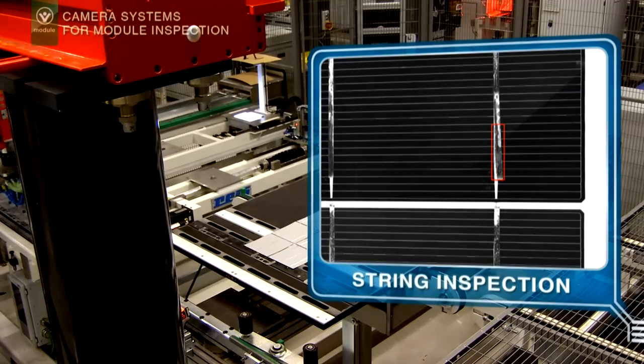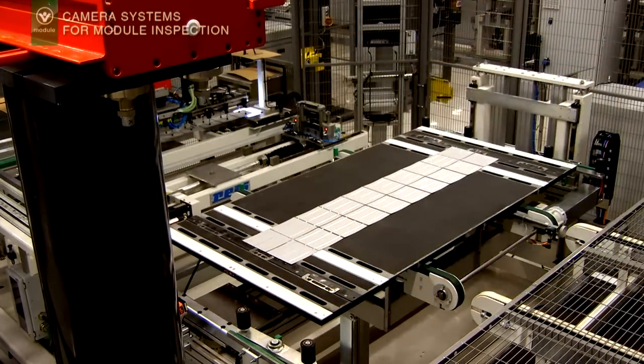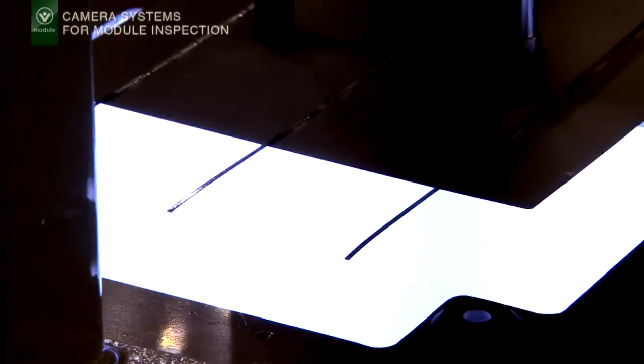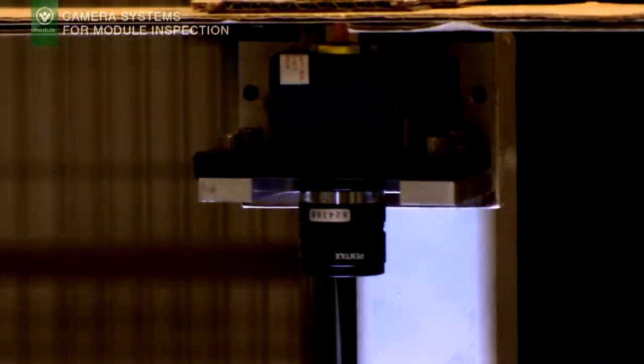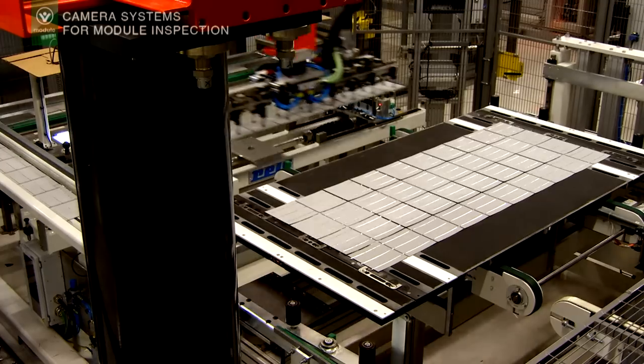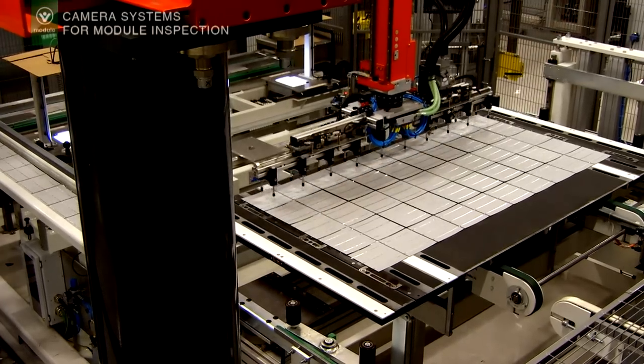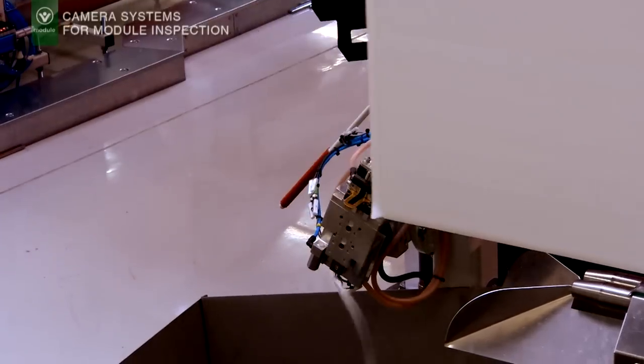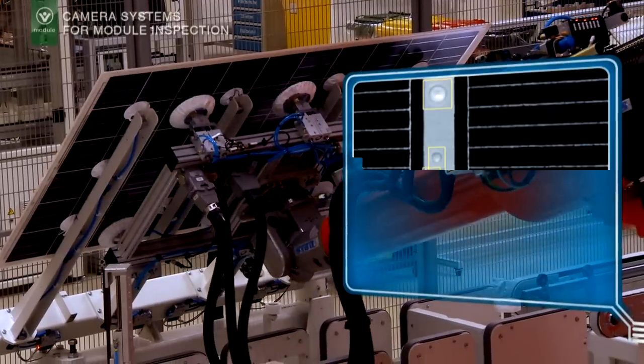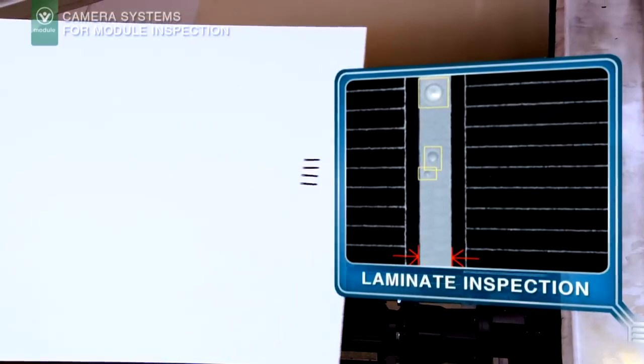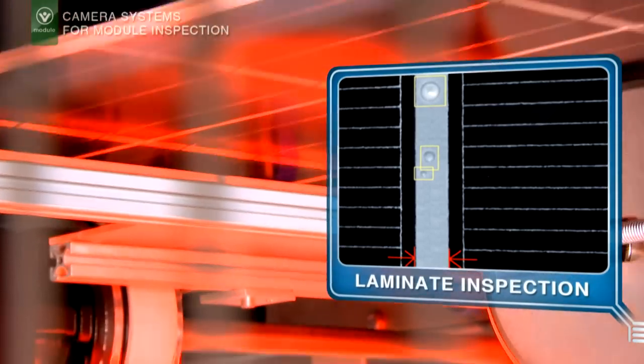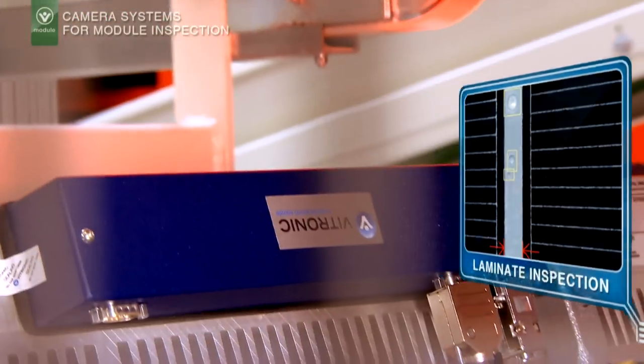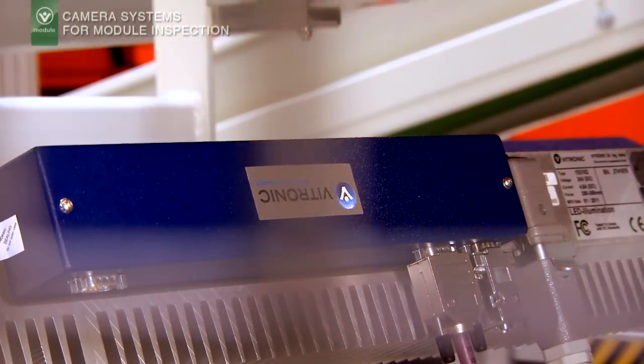During the input inspection on the stringer, Vinspec Solar Module determines the position of the cells and checks their quality. On the complete string, a comparable inspection takes place with additional checks of the contacting. Another Vinspec Solar Module system also recognizes position deviations and quality flaws which can occur during lamination.